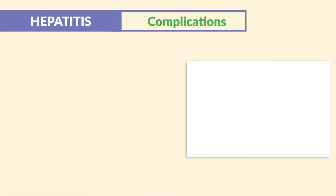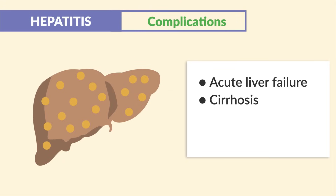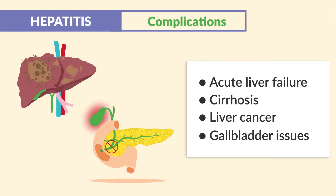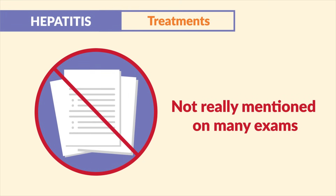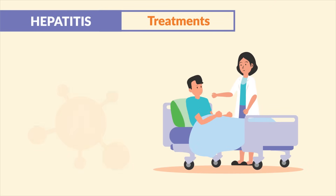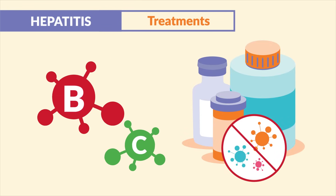Complications of liver inflammation or liver disease include acute liver failure, cirrhosis (scarring of the liver), liver cancer, and gallbladder issues as inflammation can block bile flow. For treatment, hepatitis A typically resolves on its own with bed rest, while hepatitis B and C are usually treated with antiviral medications.